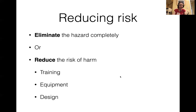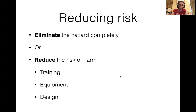Once you've assessed risk, you have to actually act on it - there's no point doing it otherwise. Once you've decided something might happen, you can look at how to reduce the risk. You can either eliminate the hazard completely, reducing the risk to zero, or make the task as safe as possible - training people, buying new equipment, or thinking about the design of the work area or environment.